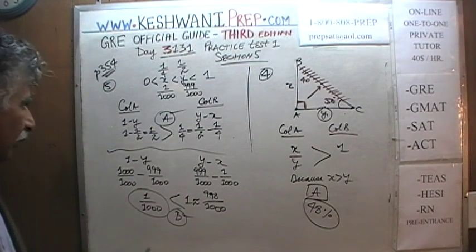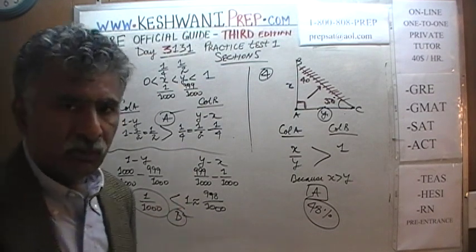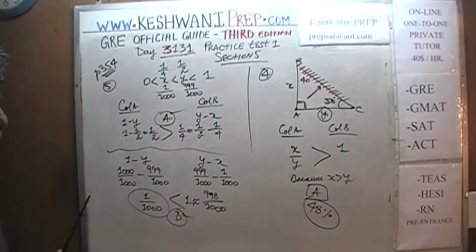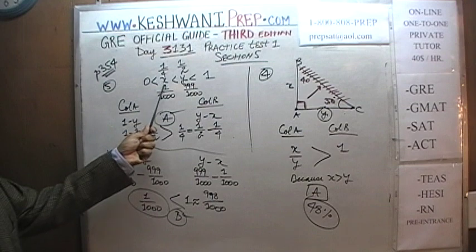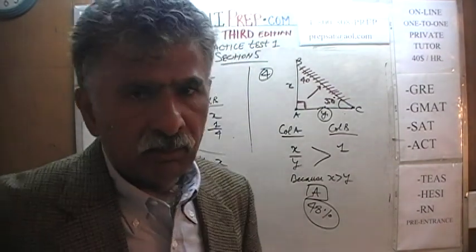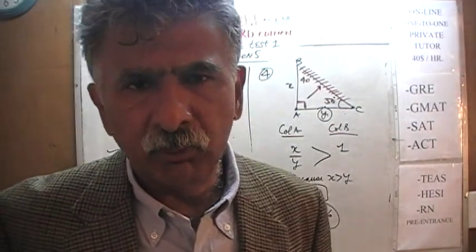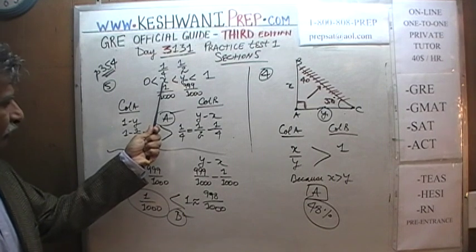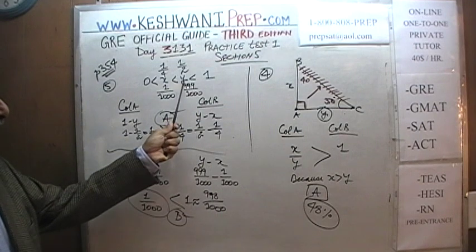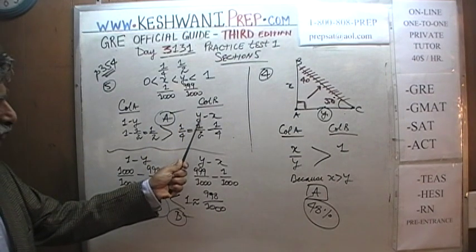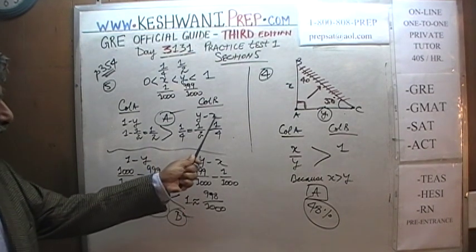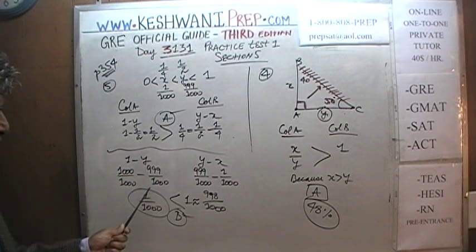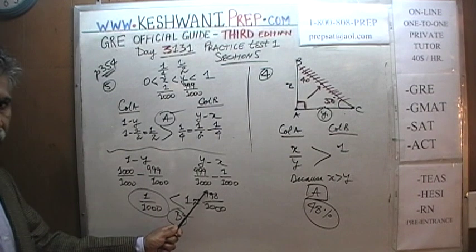The answer switched because we looked at the extreme scenario. Conceptually: X can be asymptotically close to zero, so Y minus X is essentially just Y. And if Y is close to 1, then 1 minus Y is close to zero, while Y minus X is close to 1. So this quantity becomes close to zero and column B becomes close to one — the answer switches. Therefore the answer is D.